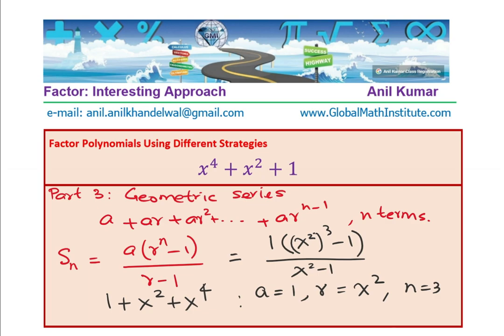And so, we can rewrite this as x to the power of 6 minus 1 over x square minus 1. Do you see that? So, that is the sum of the 3 terms given to us. So, we can say that these 3 terms equals x to the power of 6 minus 1 over x square minus 1, correct?